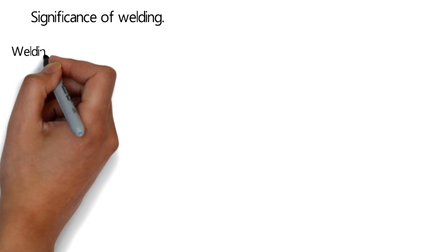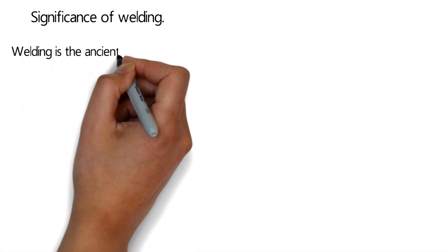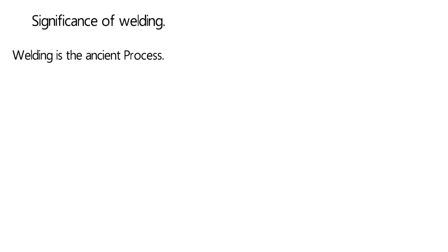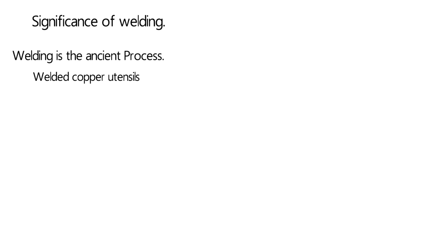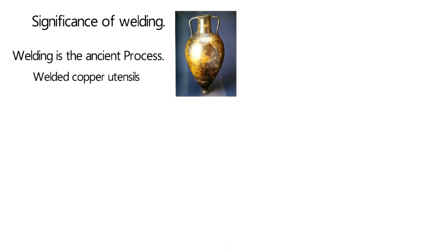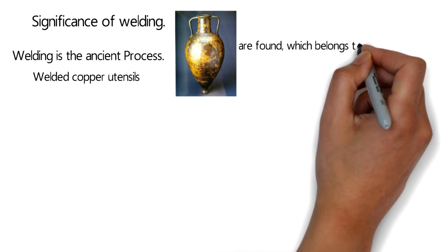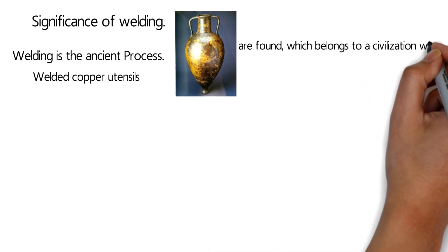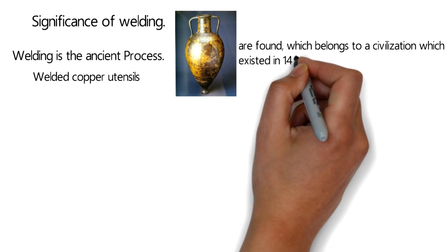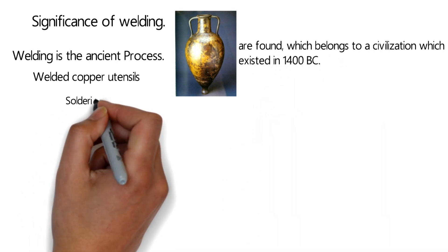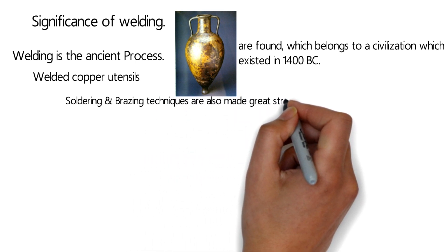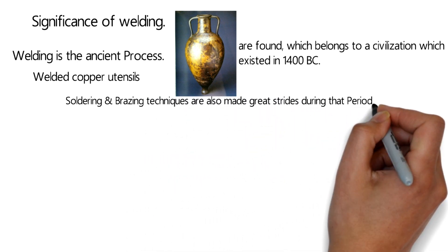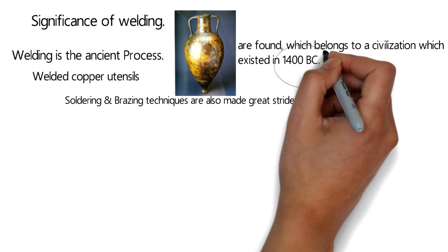Welding is an ancient process. One of the best examples is welded copper utensils, which were found and used during a civilization that existed in 1400 BC. After that, soldering and brazing techniques were also developed and made great strides during that period.